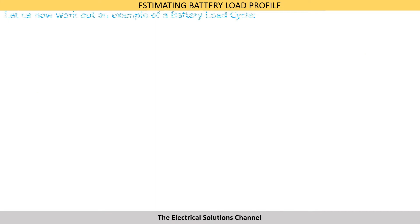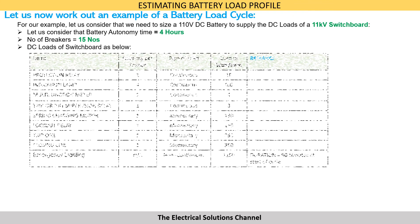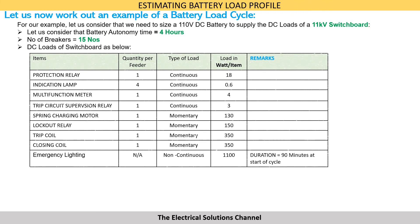Let us now work out an example of a battery load cycle. We have to size a 110 volt DC battery to supply the DC loads of an 11 kV switchboard. The battery autonomy time is considered as 4 hours, and the number of breakers in our example is 15. The DC loads of the switchboard are as given in the table.